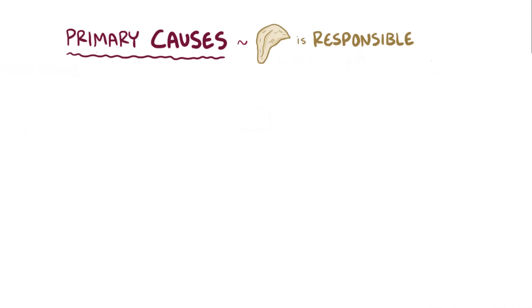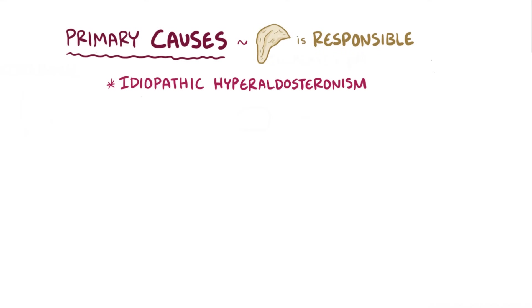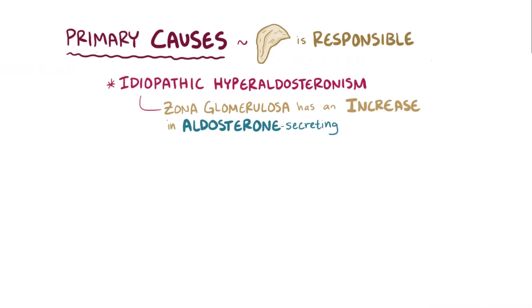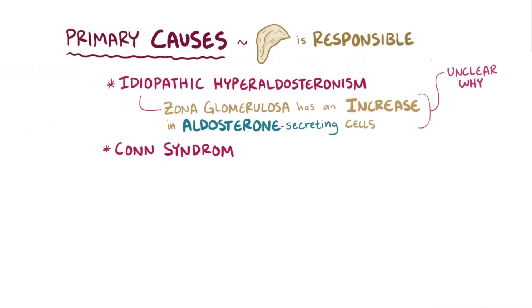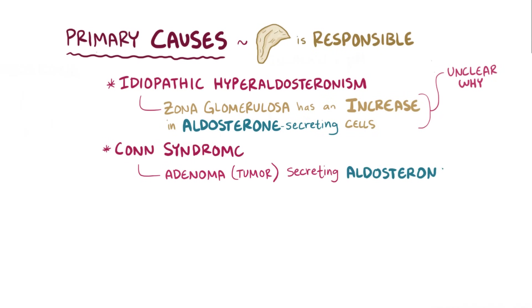Hyperaldosteronism can happen due to primary causes, which is where the adrenal gland itself is responsible for the excess production of aldosterone. The most common primary cause is called idiopathic hyperaldosteronism, because the zona glomerulosa has an increase in the number of cells secreting aldosterone, but it's not really clear why this happens. The second most common cause is called Conn's syndrome, where an adenoma, or tumor in the glandular epithelial cells, secretes too much aldosterone.